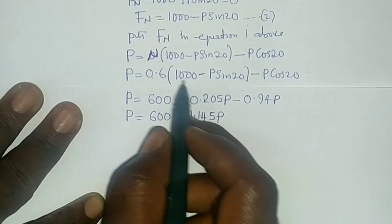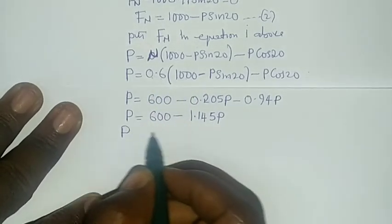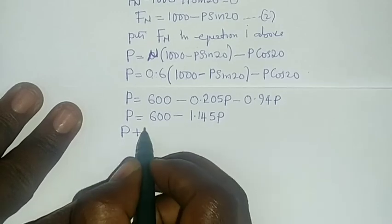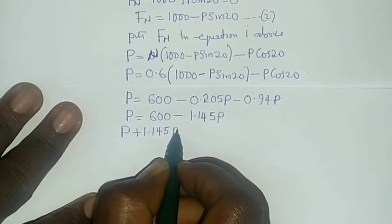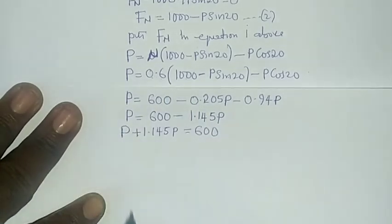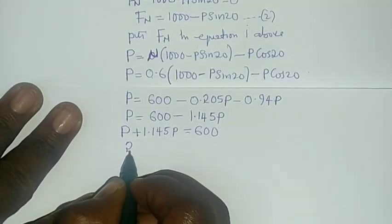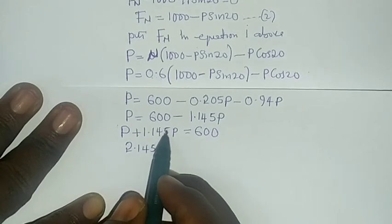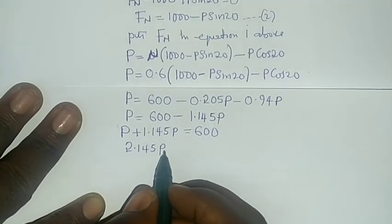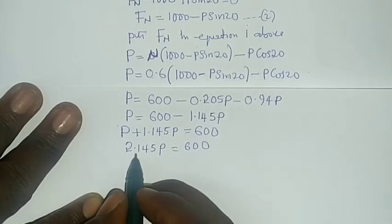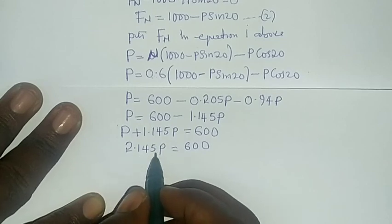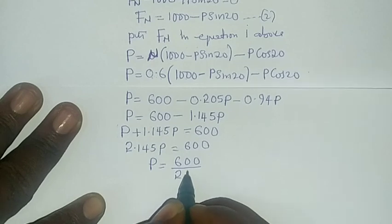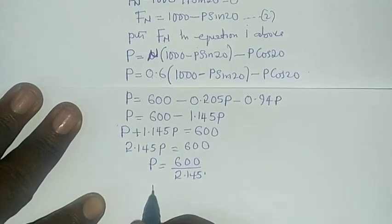From here I will collect like terms: P plus 1.145P equals to 600. So it should give me 2.145P equals to 600. We divide both sides by 2.145 to make P stay alone, so P will be equals to 600 divided by 2.145. The P here will be 279.72 newtons. That would be P.